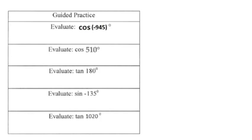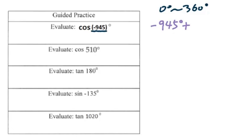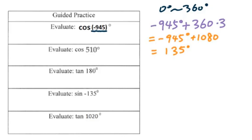Let's go to an example: evaluate negative 945 degrees. First, you have to change this angle into a positive co-terminal angle between 0 and 360. So I add 360 times 3, or keep adding 360 until you get a positive angle. You will get 135 degrees, which is the co-terminal angle.